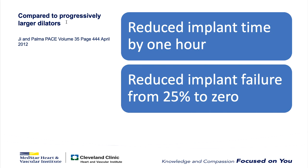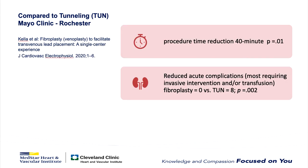Compared to progressively larger dilators, fibroplasty reduced implant time by an hour and reduced implant failure from 25% to zero. Compared to tunneling, procedure time was reduced by 40 minutes. Fibroplasty also reduced acute complications — most of which required invasive intervention and/or transfusion — from eight to zero.